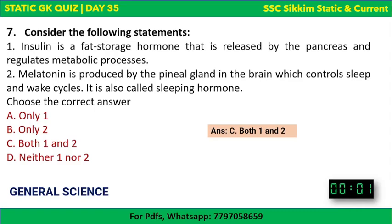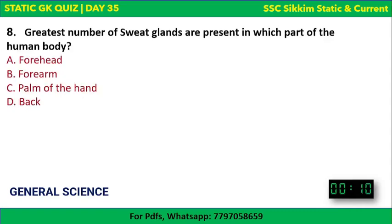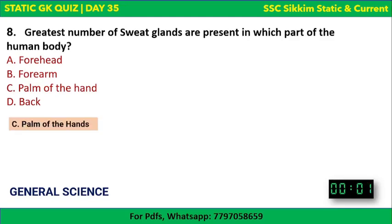Next question: the greatest number of sweat glands are present in which part of the human body? Options: forehead, forearm, palm of the hand, or back. The correct answer is palm of the hand. Note that toes also have a high number of sweat glands, but if palm is the only such option, select palm safely.